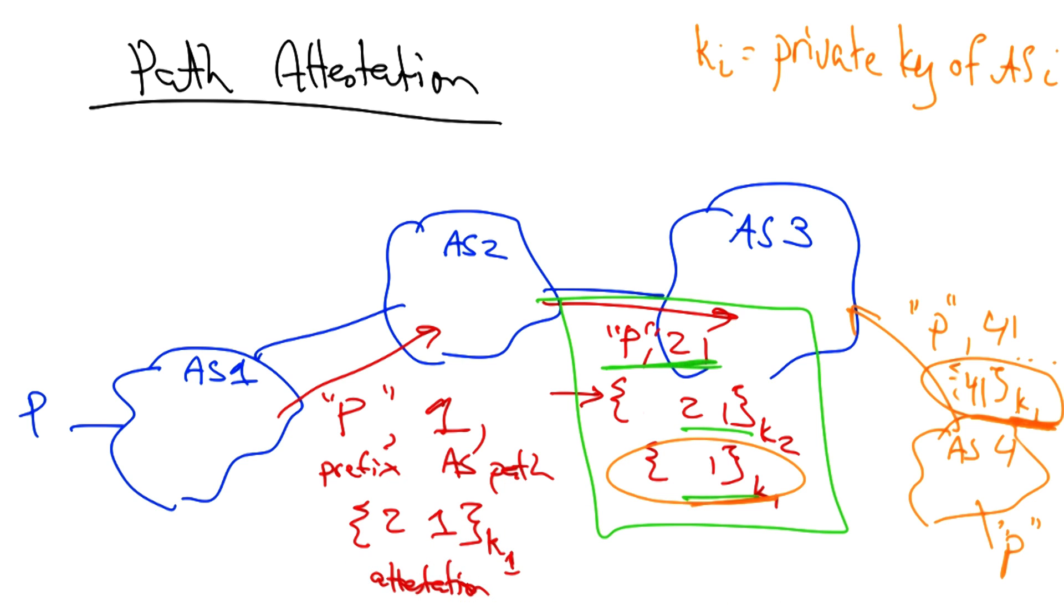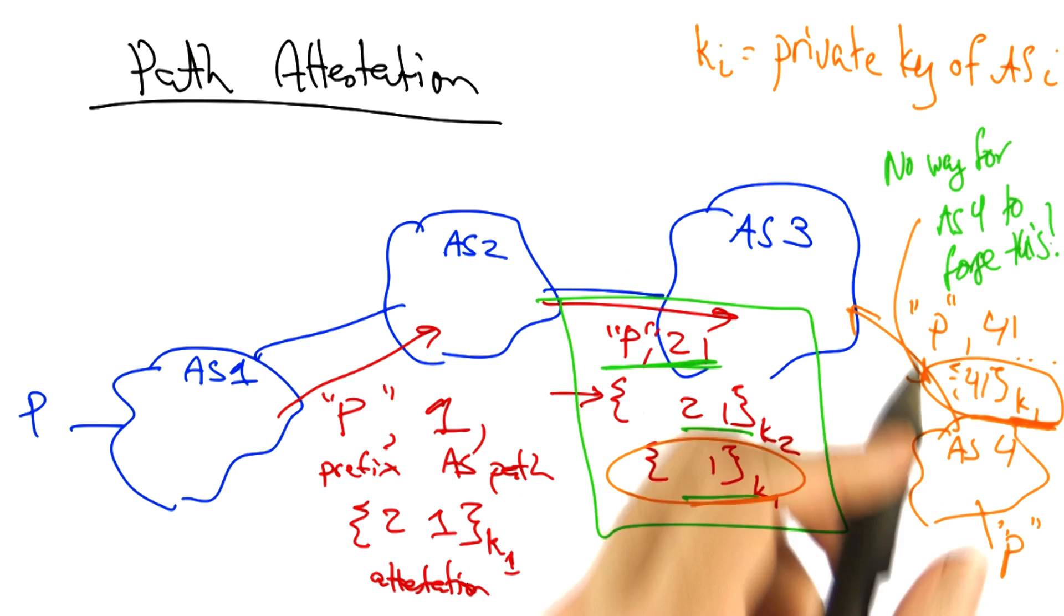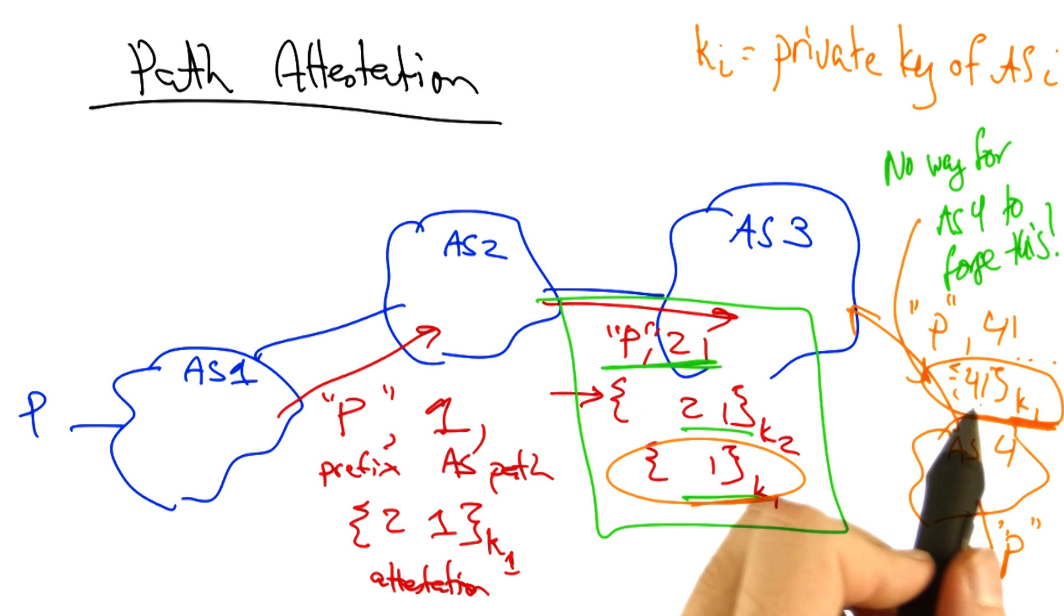Signed by AS one's private key. Whereas if AS one only signed a message with its own AS in the message, such a segment or attestation could easily be replayed. There's actually no way that AS four could forge the path attestation four one, signed by AS one's private key, because it doesn't own this private key.